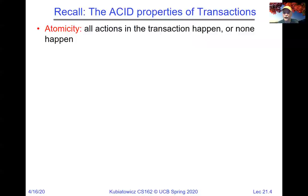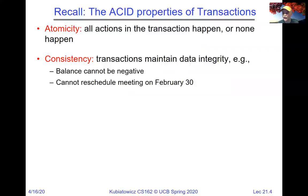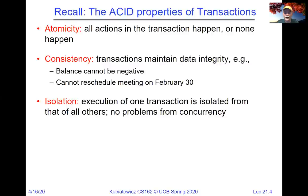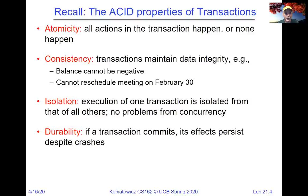These are usually called the ACID properties. Atomicity means either everything in the transaction happens or nothing happens. Consistency means that when transactions do happen, the data itself keeps its integrity. Isolation means one transaction appears to have happened by itself, regardless of many running simultaneously. And durability says that if a transaction commits, its effects persist despite crashes.